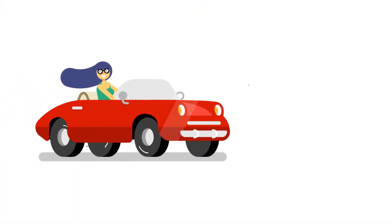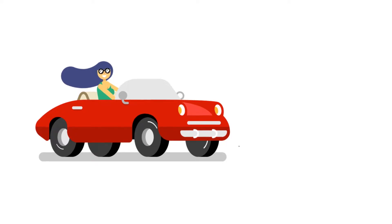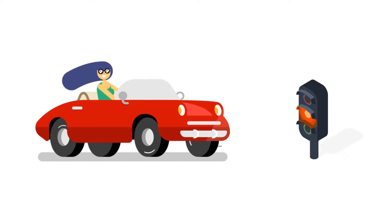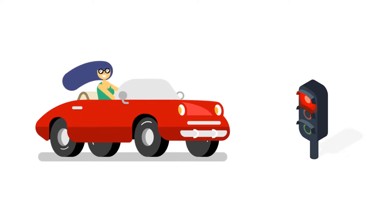Consider we are creating an application to drive a car every day, and whenever it sees a red light, stop the car and write to a database. We will create a new application with three projects representing the three layers of clean architecture. Let's go to our solution.